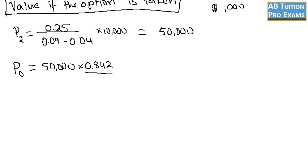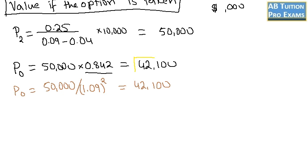P0 equals 50,000 multiply 0.842. I have taken this figure from the present value table for 9% in two years. In F9 exam, on the last two pages of the question sheet, the present value table and annuity tables are given to you. It gives us 42,100. Another way of finding the P0 if you don't have access to the present value table is the same as 50,000 divided by 1.09 square. And you will get exactly the same answer. 42,100 would be the present value of the company if we take the option.